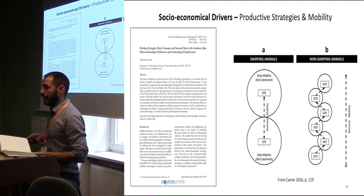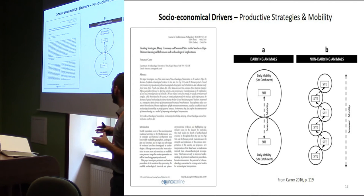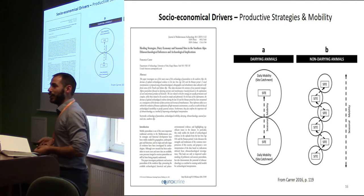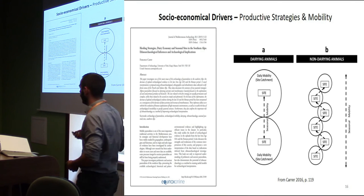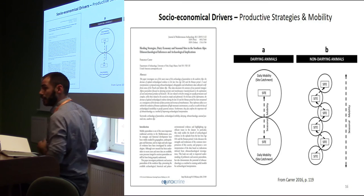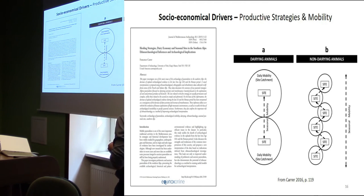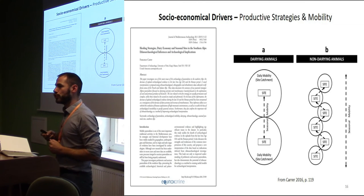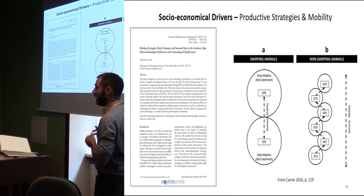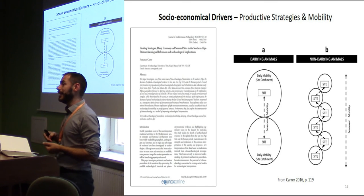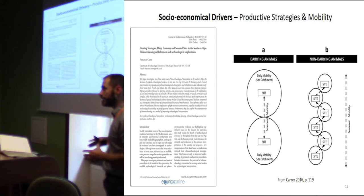We also have ethnographic analogies suggesting that the appearance of dry stone structures might be related to a change in the economy. During my ethnoarchaeological research, I realized that herders dealing with non-dairy animals are much more mobile than herders dealing with dairy animals, because they need to milk them, store the milk, process the milk, and store the cheese — so they need a permanent structure.